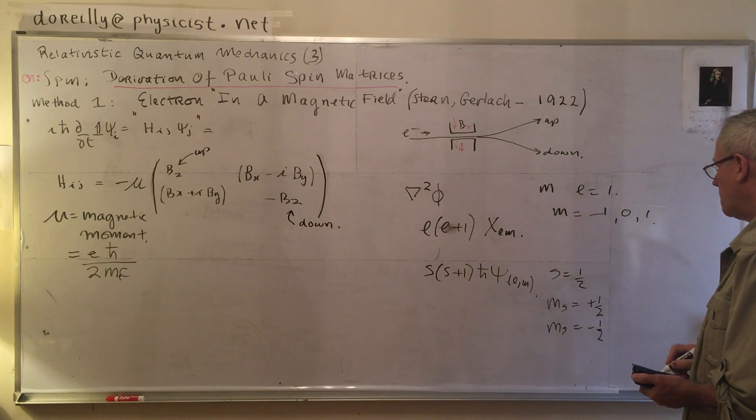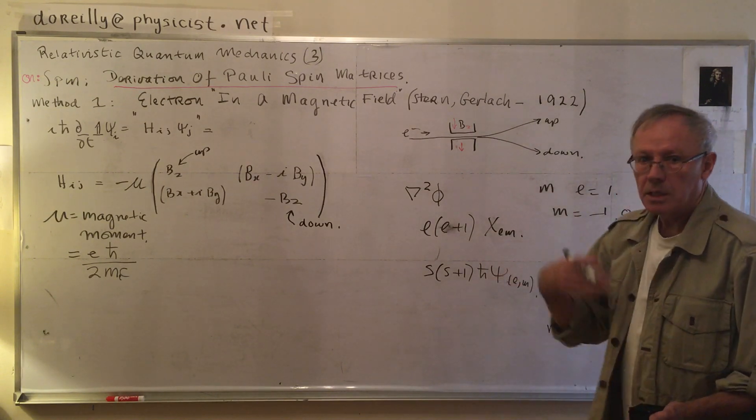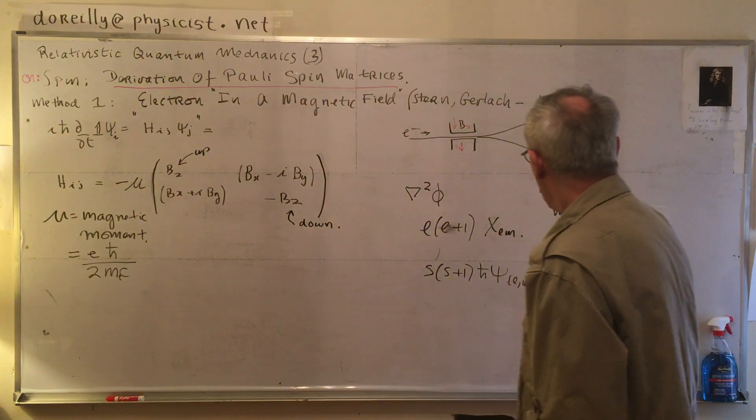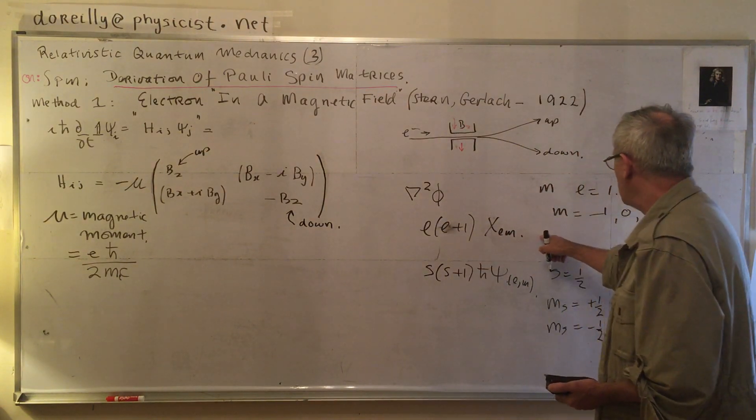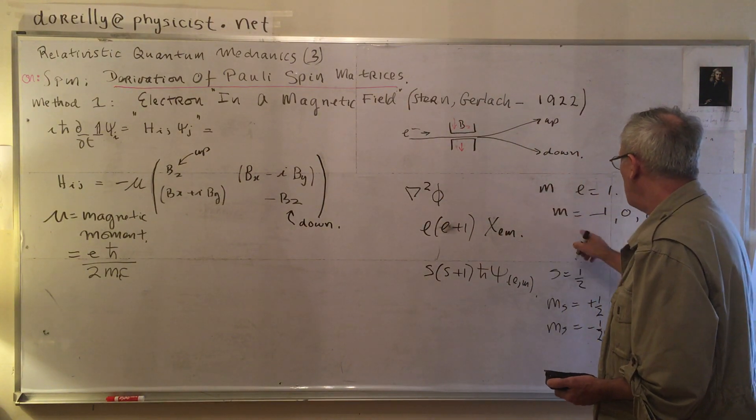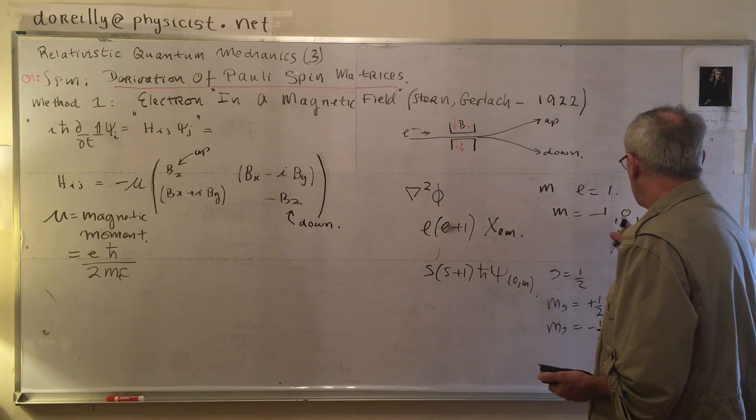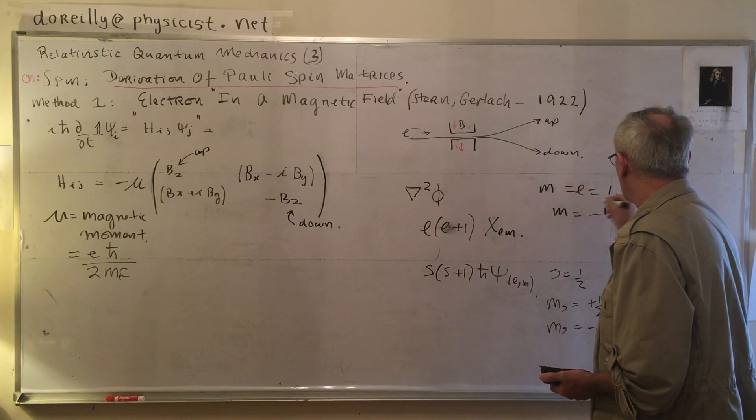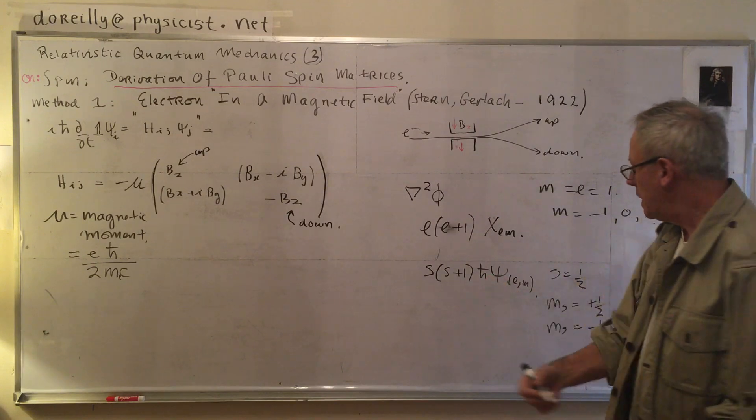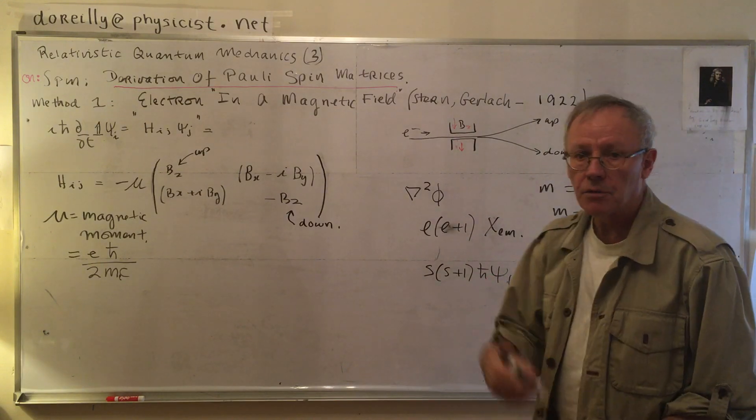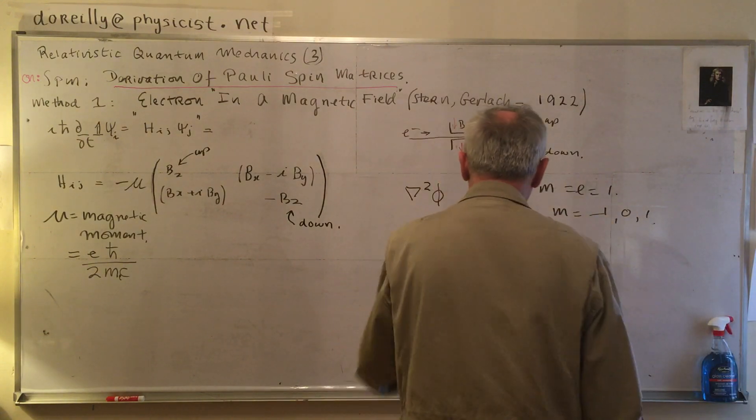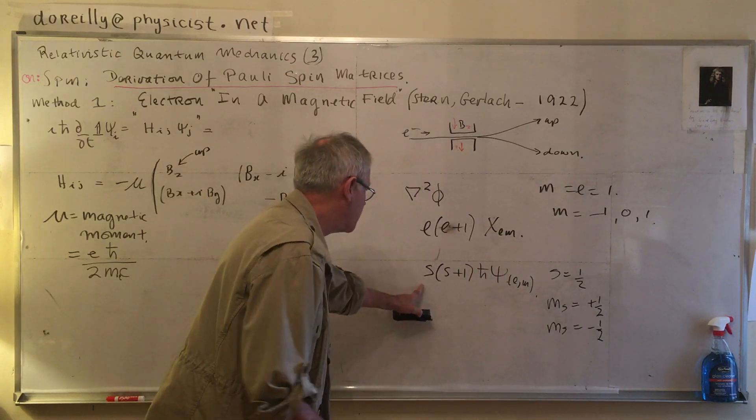When we have spin, spin can be half integers. When we have ordinary angular momentum on a large scale, the spin, the L, is an integer. L is one, two, three, four, five, six. But in this case here, it's going to be half, three over two and so on and so forth. So, if we put in S equals a half, we get three-fourths h cross.